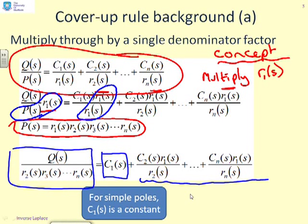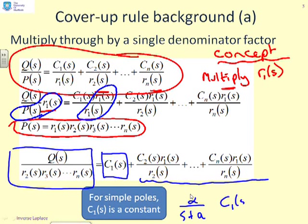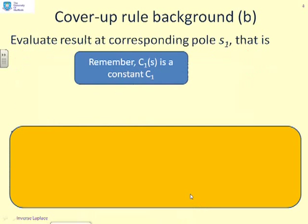The final note: if you were doing simple poles — something like alpha over S plus A — then the numerator factor, the residue, is just a constant. So although for completeness we've written C1 of S, C2 of S, and so on, for simple poles, C1 of S is just going to be equal to a constant C1. And that's going to make our life a lot easier. So the reminder: C1 of S is just a constant C1.